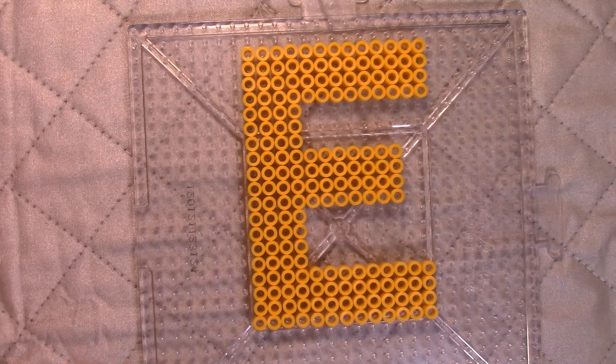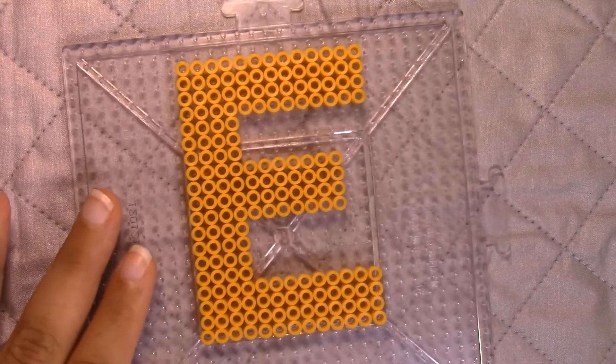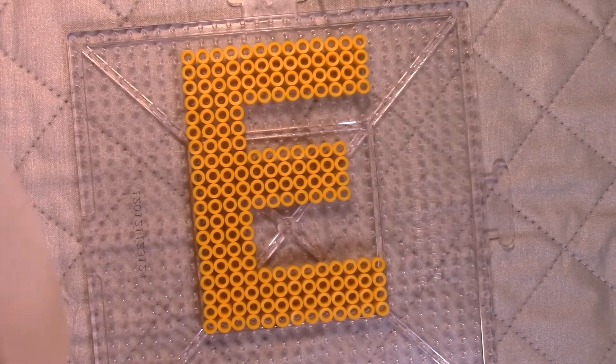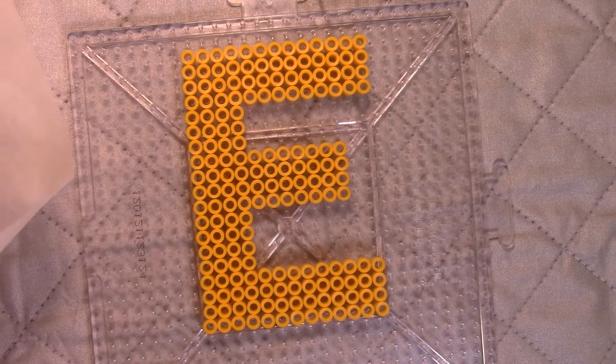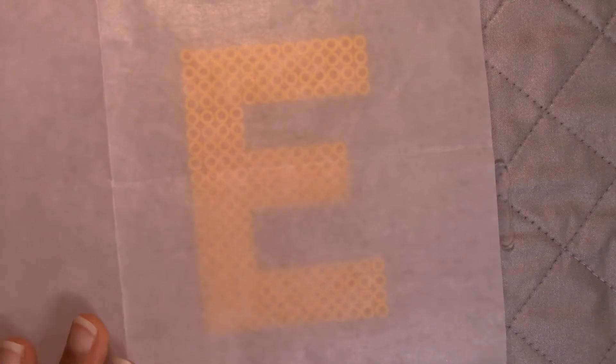I have the plastic grid here with my letter and some parchment paper. The side that's the most waxy, I'm going to put it face down on top of my letter. And you can reuse the same piece of parchment paper over and over again, so it's not a big investment there.